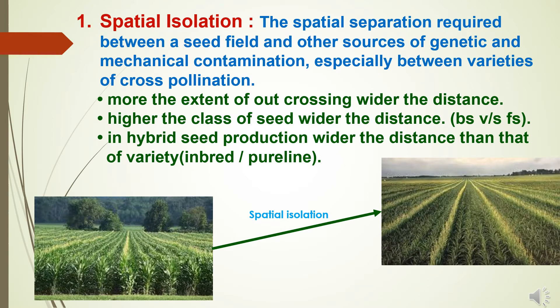The first type is spatial isolation — the spatial separation required between a seed field and other sources of genetic and mechanical contamination, especially between varieties of cross pollination. Spatial isolation depends on different factors: more the extent of out-crossing, wider the distance; higher the class of seed, wider the distance — for example, breeder seed requires more distance compared to certified seed; and in hybrid seed production, wider distance than for a variety.